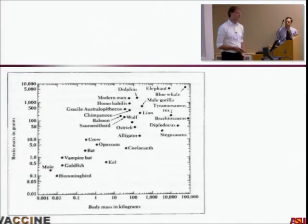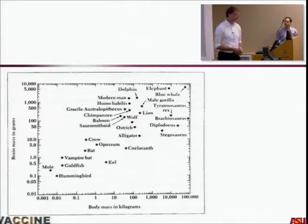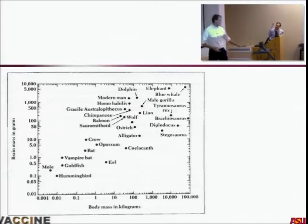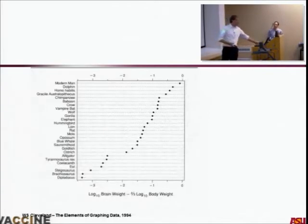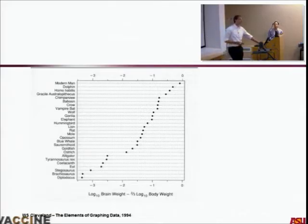This graph is a visualization trickery — the axes are body mass in kilograms and brain in grams, so humans wind up in the middle somewhere. The reason is that we really need to look at the log of the brain weight minus two-thirds of the log of the body weight. When we do that, modern man winds up in the upper right portion. It's more about proportionality of different things.